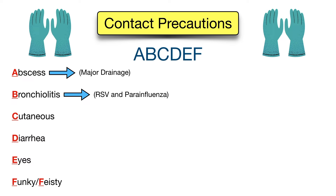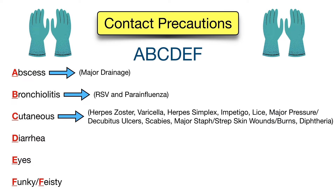C is for cutaneous — many diseases involving the skin use contact precautions. This includes herpes zoster (shingles) and varicella (chickenpox). Remember chickenpox and disseminated herpes zoster also require airborne precautions. Other cutaneous diseases requiring contact precautions include herpes simplex, impetigo, lice, major pressure or decubitus ulcers, scabies, major staphylococcal or streptococcal skin wounds or burns, and diphtheria — specifically the cutaneous form, not the pharyngeal form.